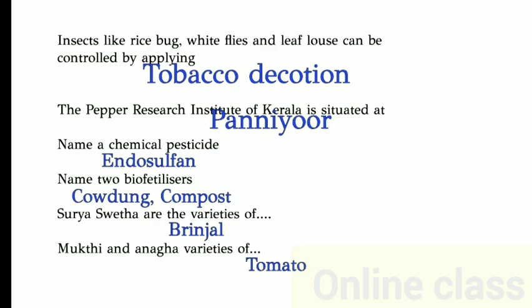Surya and Shweta are varieties of brinjal. Mukti and Anaga are varieties of tomato.